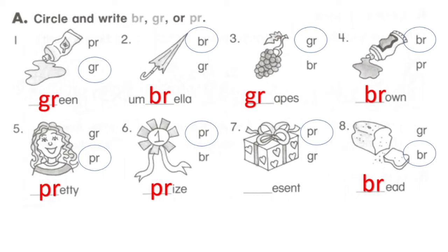Ok, A. Circle and write br, gr, or pr. Number 1, circle with gr and write gr, green. Number 2, circle with br, umbrella. Number 3, gr, right gr, grapes. Yes! And number 4, circle with br, brown.